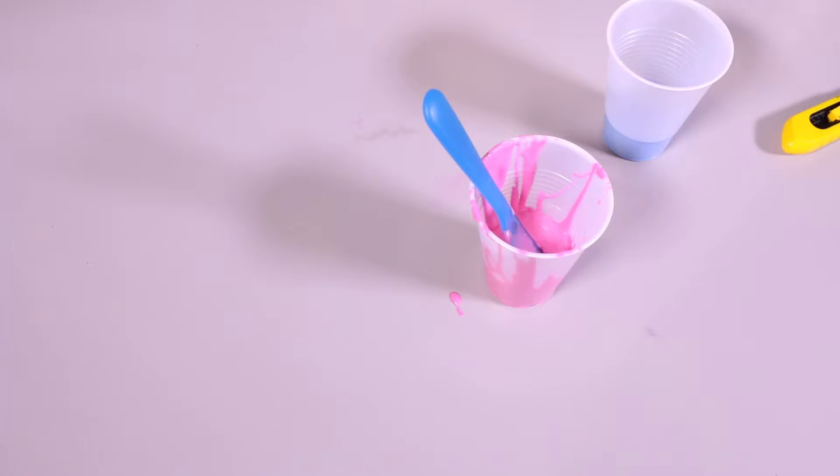So you're going to first start out with the A, which is the pink. Once you get that poured, you'll go ahead and pour the blue. Make sure that it is an equal ratio.